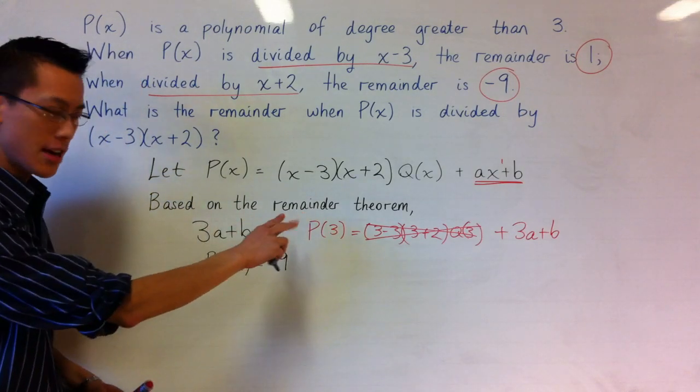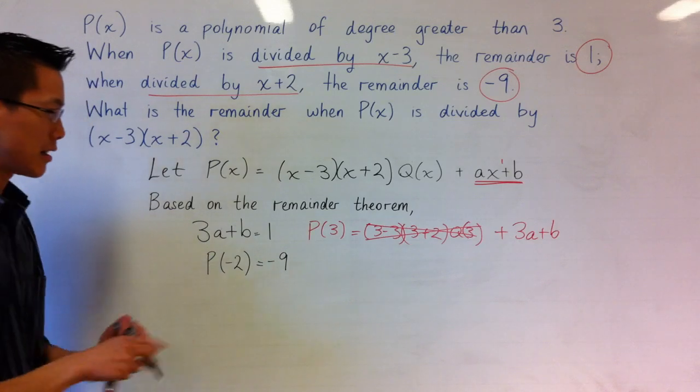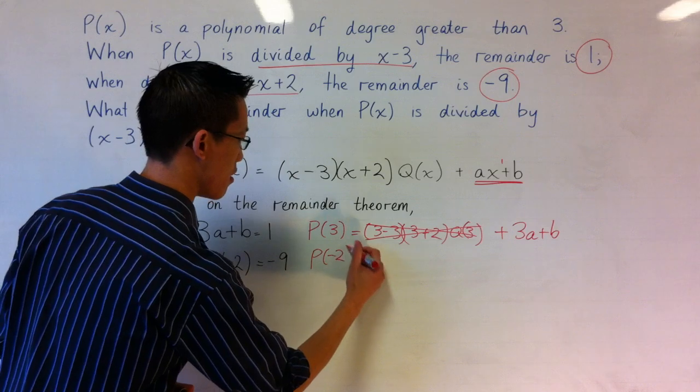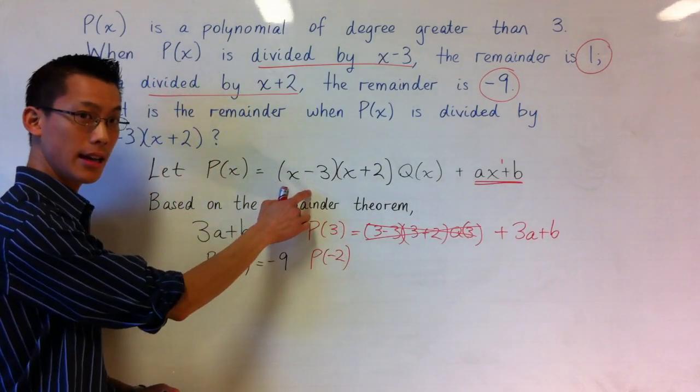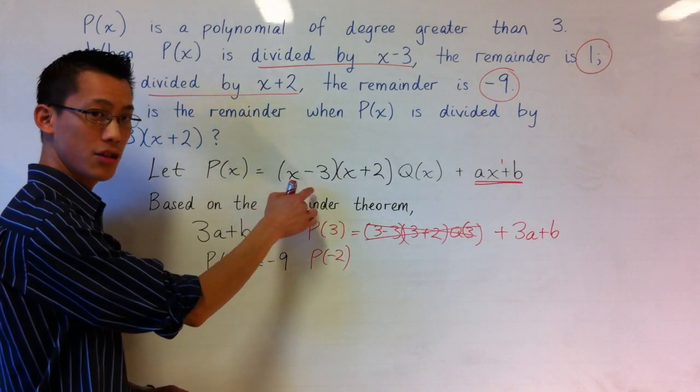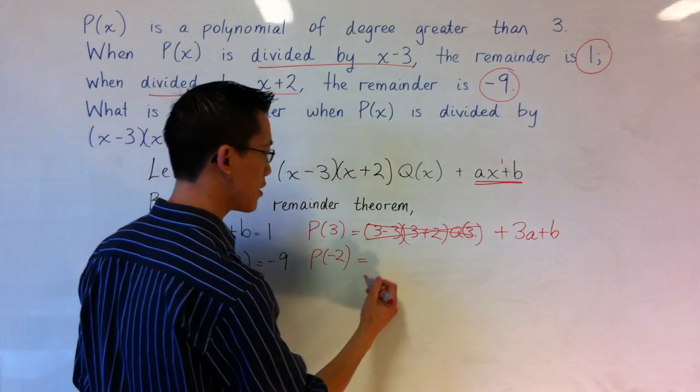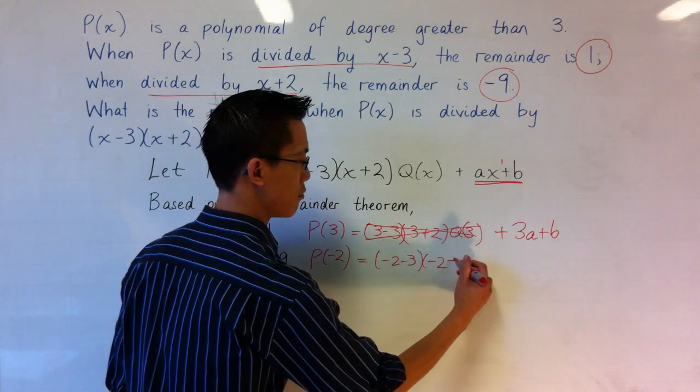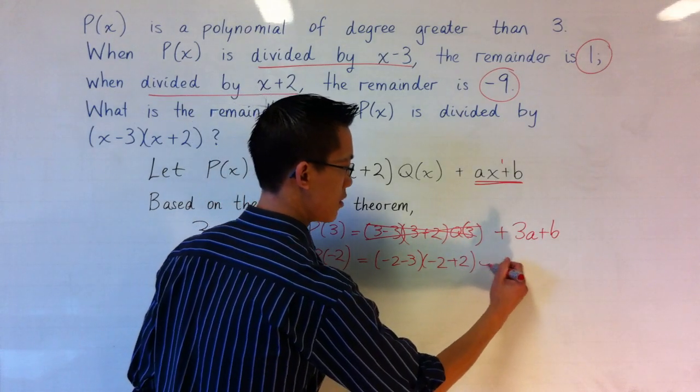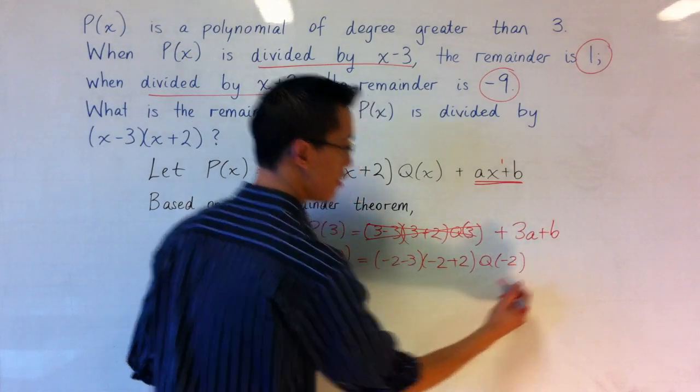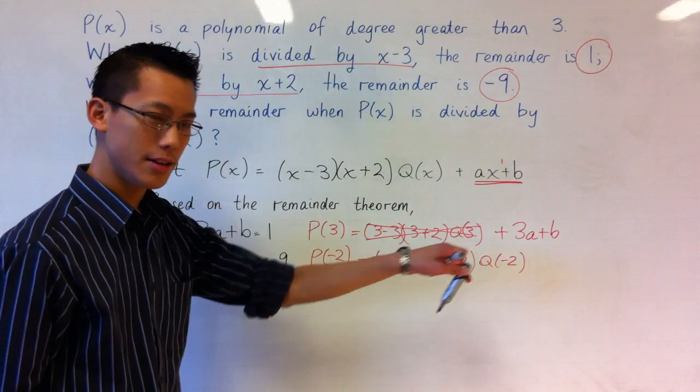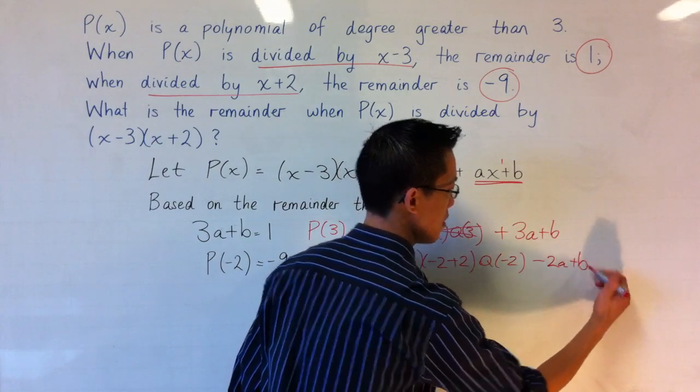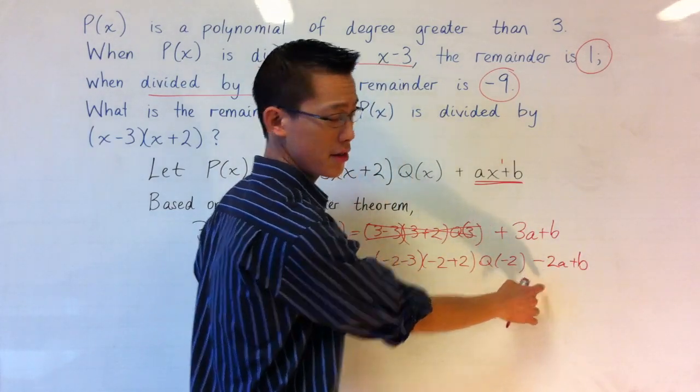Now having done that first step, I think you can see where I'm going to go here. I'm going to make a similar statement about P(-2) by evaluating this line here with minus 2 as my value for x. And the same kind of thing is going to happen. I've got (-2-3)(-2+2)Q(-2). Now on the end here, this is the important part in some ways, I've got -2a plus b because my x has been replaced by a minus 2 here.